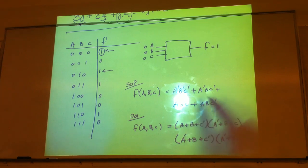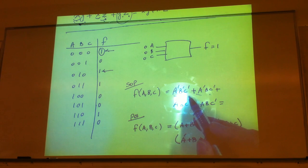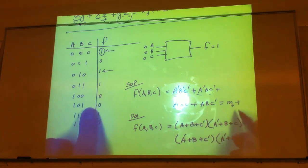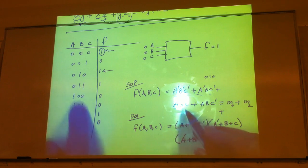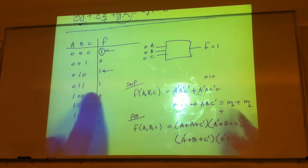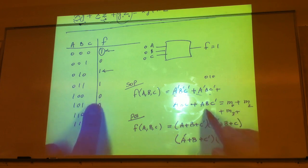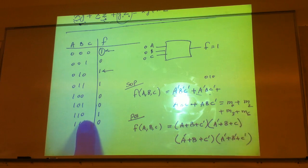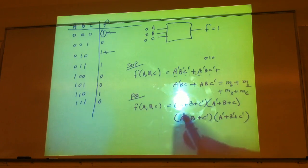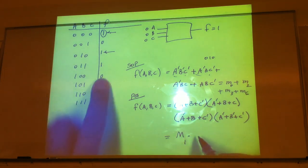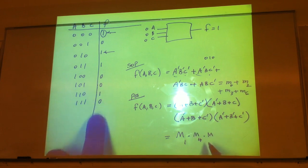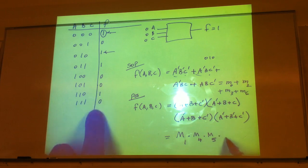So those are all max terms by definition. So instead of representing them explicitly, the min terms in M notation are: a-prime, b-prime, c-prime is M0; a-prime, b, c-prime (binary 010) is M2; a-prime, b, c (binary 011) is M3; a, b, c-prime (binary 110) is M6. So we have summation of M: 0, 2, 3, 6. And for the max terms: M1, M4, M5, M7.